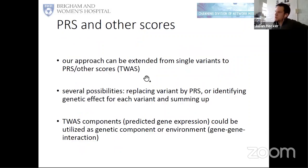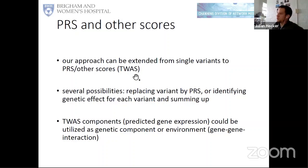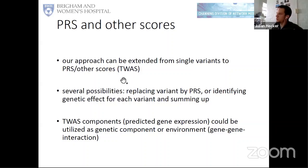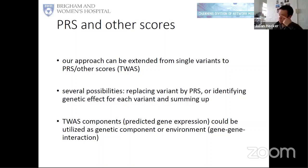This approach could also be extended beyond single SNPs to polygenic risk scores or other gene-set based scores, for example from the TWAS universe. Basically, this would replace the genetic effect by the score, or we would perform the step for all variants separately and then combine things in the testing step — essentially a weighted polygenic risk score weighted by environmental factors. Looking at TWAS components such as predicted gene expression for specific genes could also be interesting, because gene-set based scores generally have more variation and thus more power for gene-environment interaction detection.